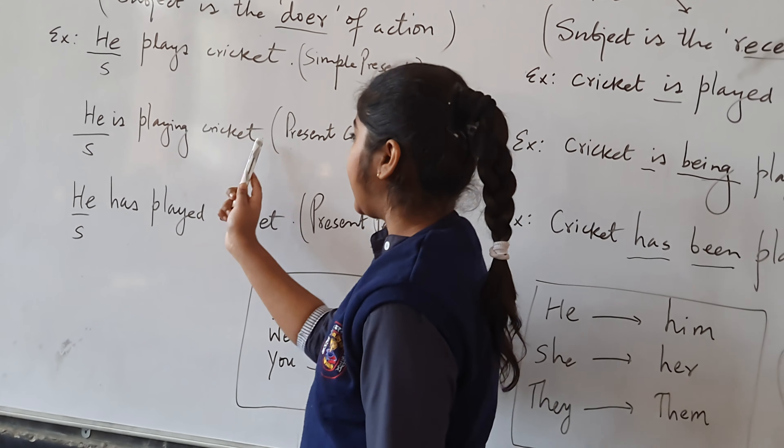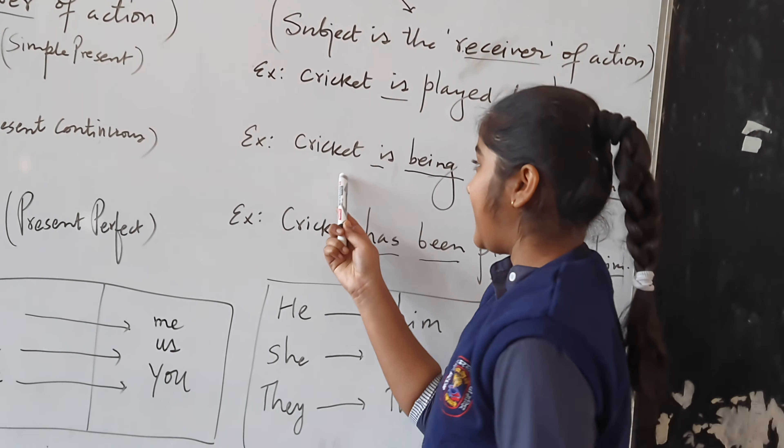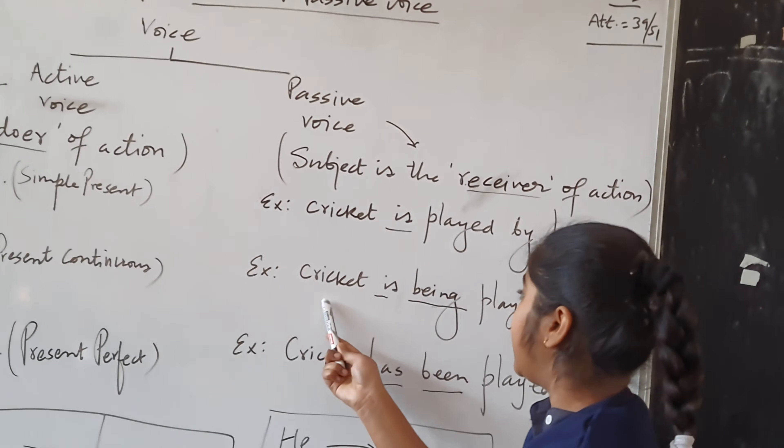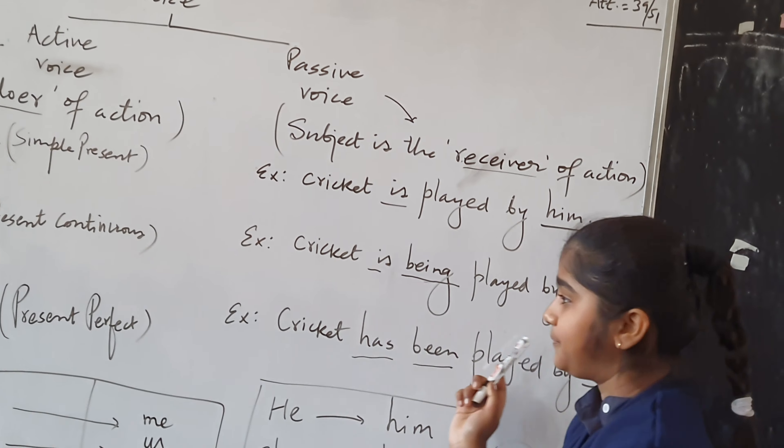The second one is present continuous: 'He is playing cricket.' When we change it into passive voice, it becomes 'Cricket is being played by him.'